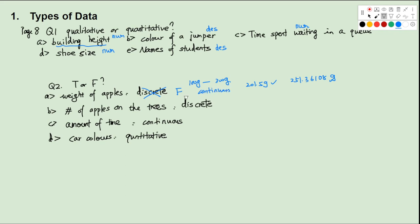Next: number of apples on the trees. Think about how many apples — zero, one, two, maybe up to 500. Can you have 1.25 apples on the tree? No, it's not allowed. So in this case it's discrete, which means the statement is true.